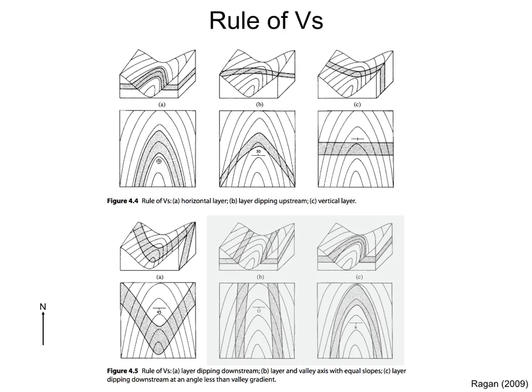This slide summarizes these rules. In all the figures, the upper row is a three-dimensional diagram, and the lower row is a map. The topographic contours are denoted by the black lines, and the layer by the stippled band. In all cases, the stream flows towards the south.